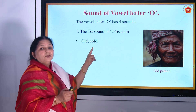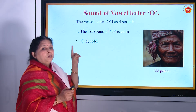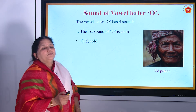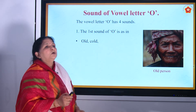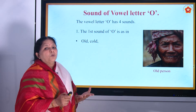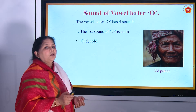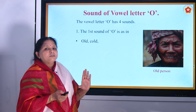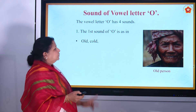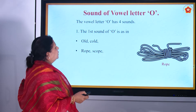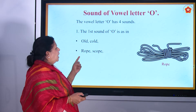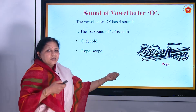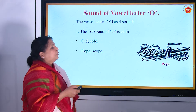Then 'cold' — C, O, L, D — cold. Ice is cold, or the weather is cold. The coffee or tea is cold. So that's cold. Then 'rope' — R, O, P, E — rope, which we tie with something.